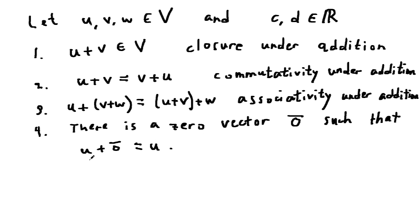So if you add zero to any vector u, you just get back u. The zero vector is called the additive identity.